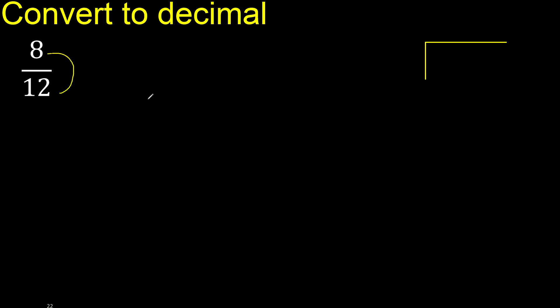8 divided by 12. 8 is less than 12, therefore complete with 0.